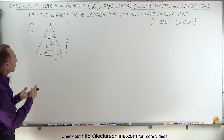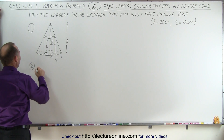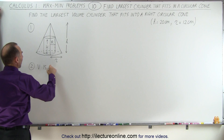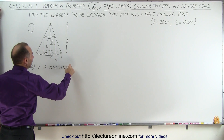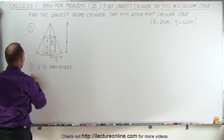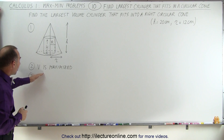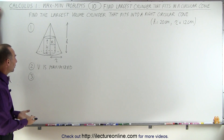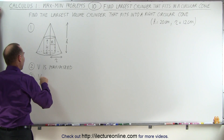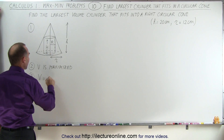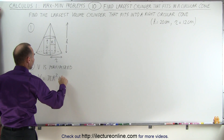We need to figure out what's being maximized or minimized. In this case they tell us that volume is maximized. It's always a good idea to write it out. We're going to write an equation for the volume as a function of the unknown variables. The volume of the cylinder can be written as the area of the base, which is pi R squared, times the height H.